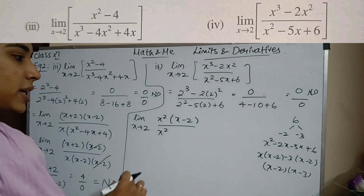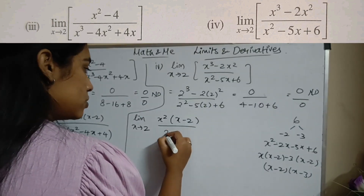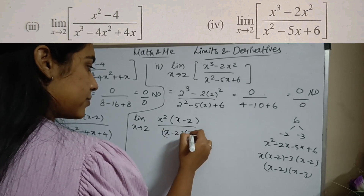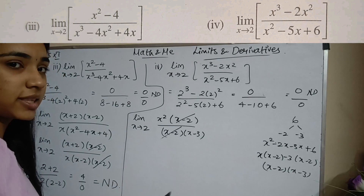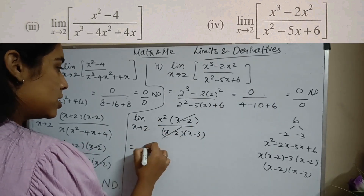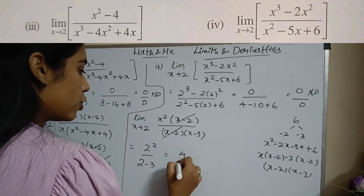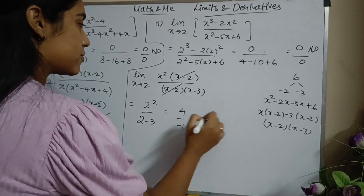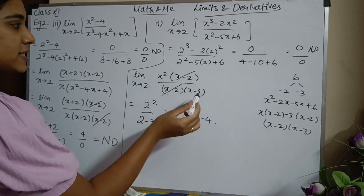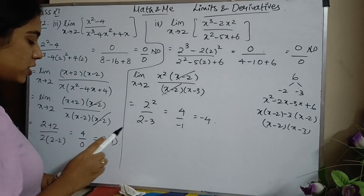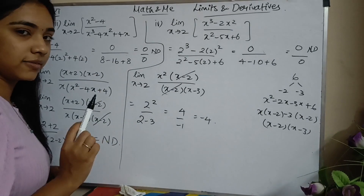So the denominator is (x-2)(x-3). The (x-2) terms cancel. Substituting x = 2 gives 2² / (2-3) = 4 / (-1) = -4. The limit exists here and equals -4. This is different from the previous subsection where the denominator was still 0 even after cancelling.